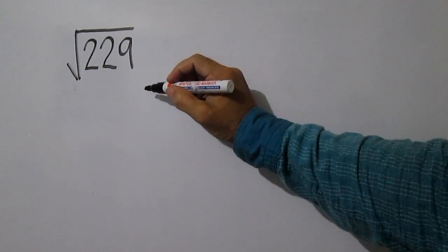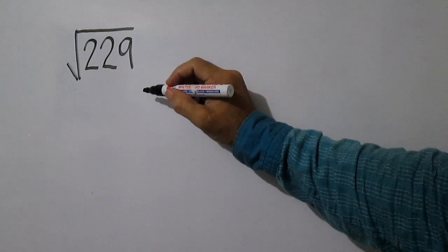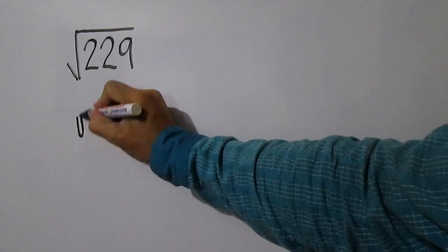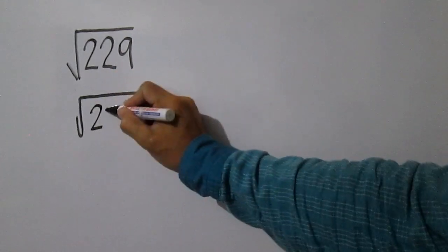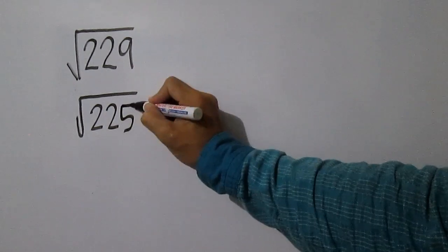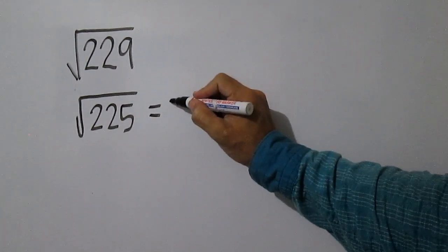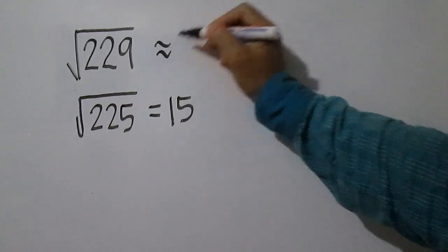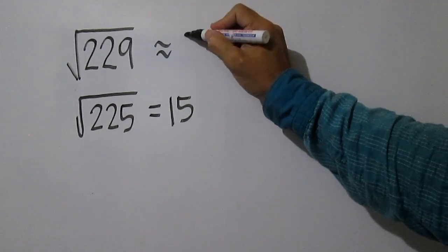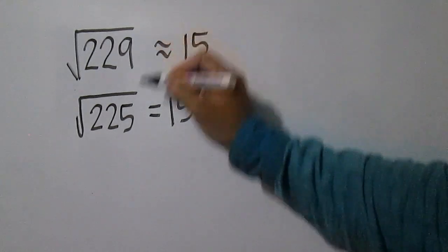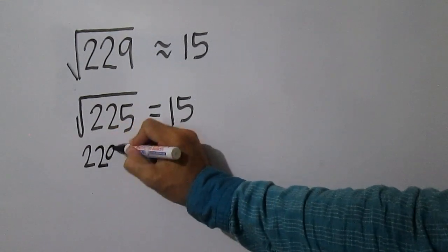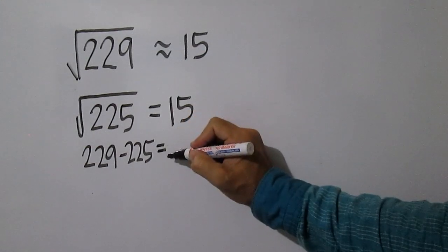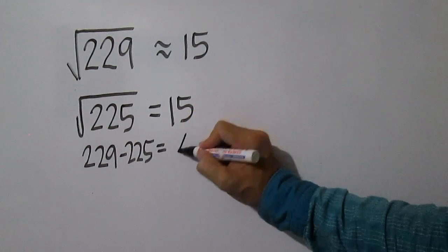Square root of 229. The closest perfect square less than 229 is 225, and the square root of 225 is 15. 229 minus 225 is 4.